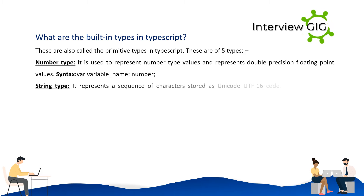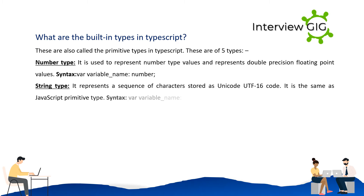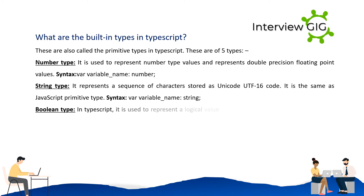String type: represents a sequence of characters stored as Unicode UTF-16 code. It is the same as JavaScript's primitive type. Syntax: var variable_name: string.